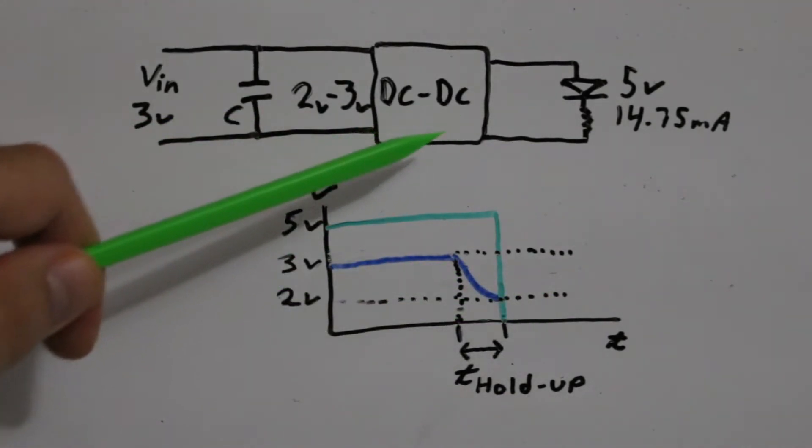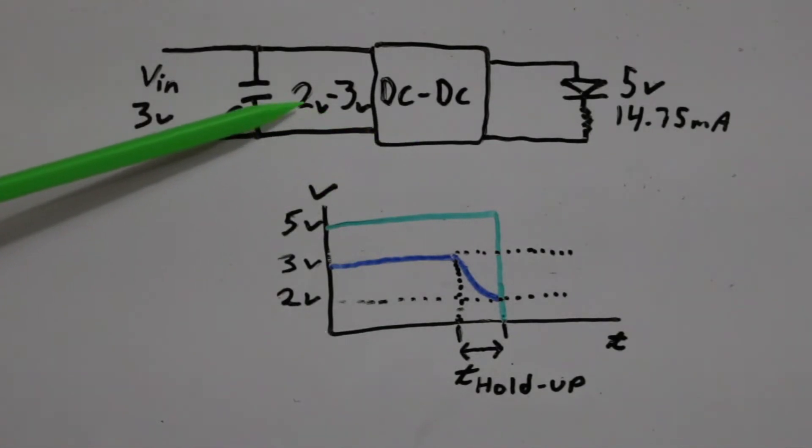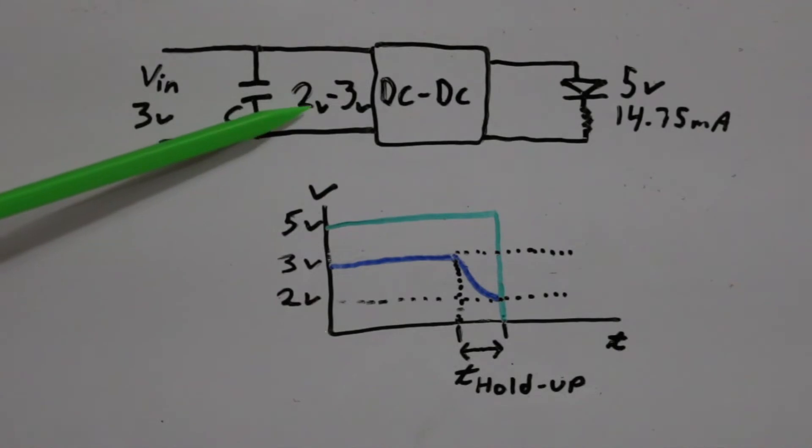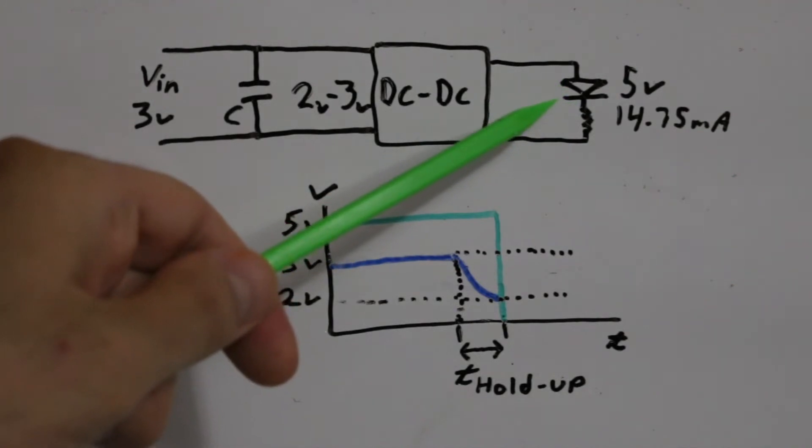I'm using a boost converter that claims to need at least 2 volts in to regulate the output, so I'm running between 3 volts nominal down to 2 volts when power is lost.